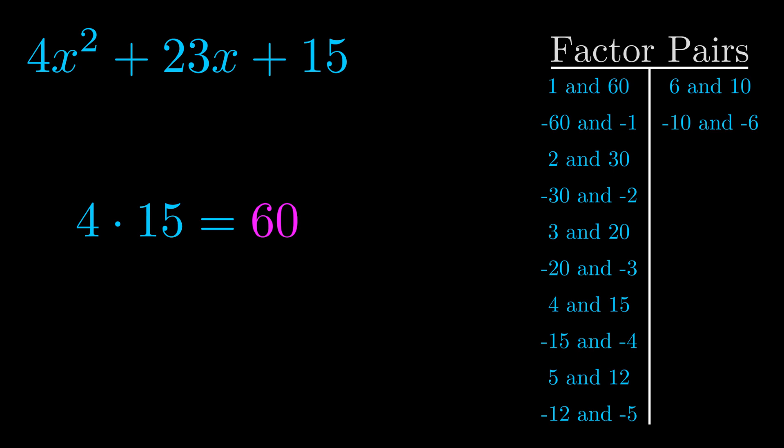The b value is the coefficient on the x term. That's the middle term, the one that we haven't done anything with yet. And really this is the only factor pair that we need.